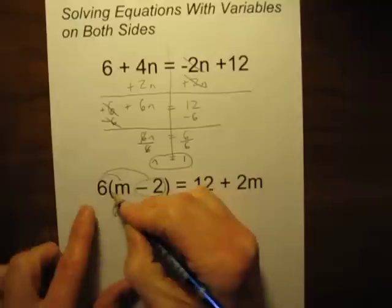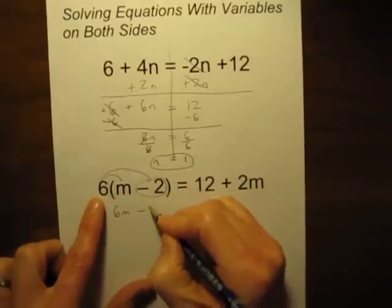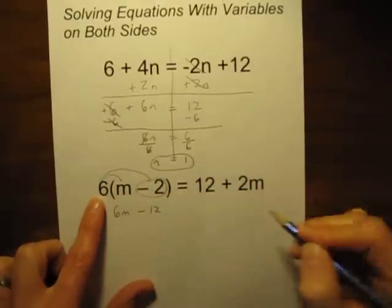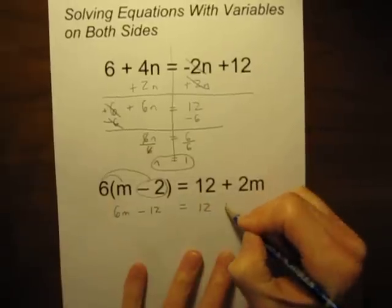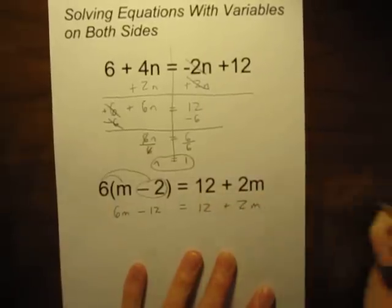That would be 6m, and 6 times negative 2 is negative 12. Let's just rewrite what we have over here. 12 plus 2m.